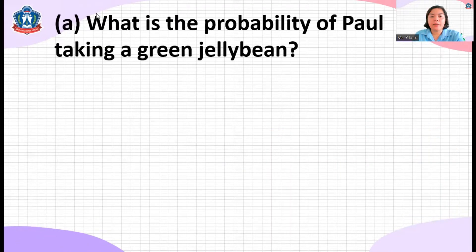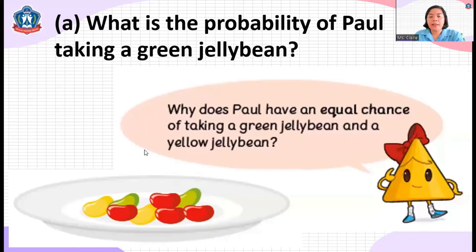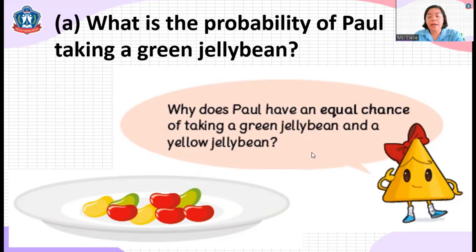Another example: What is the probability of Paul taking a green jelly bean? Why does Paul have an equal chance of taking a green jelly bean and a yellow jelly bean? There are two green jelly beans and also two yellow ones, so they have an equal chance of getting either a green or a yellow jelly bean.